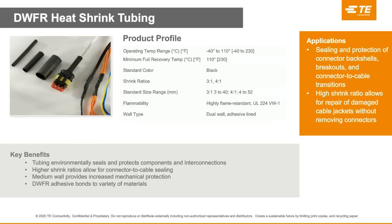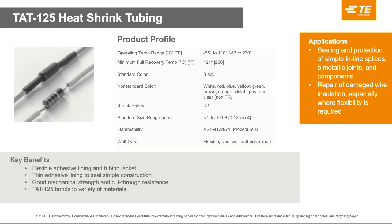Our DWFR, or Dual Wall Flame Retardant heat shrink tubing, is another adhesive-lined, medium-walled, highly flame retardant tubing product with a high shrink ratio. Our DWFR meets the VW-1 flammability rating — the vertical wire test — which is one of the highest ratings in the industry. Finally, the TAT125 heat shrink tubing has a flexible adhesive lining and tubing jacket, making it ideal for simple sealing of inline splices, bimetallic joints, and components. It has good mechanical strength and cut-through resistance, and comes in a variety of colors with a standard 2-to-1 heat shrink ratio.